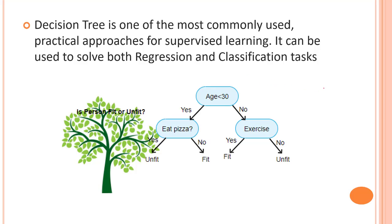In the decision tree we have different nodes, different units, and each of these units is a representation of some logic, some decision. It can be used for regression and classification tasks. Before going into the actual algorithm behind the decision tree, let's just have a glimpse of the regression tree, and once we start with the classification task we will go much deeper into the algorithm and math.